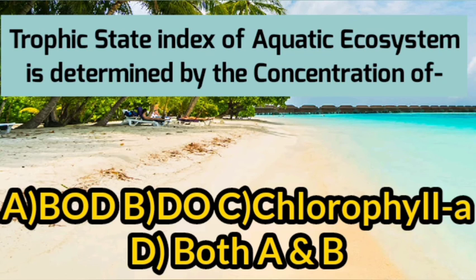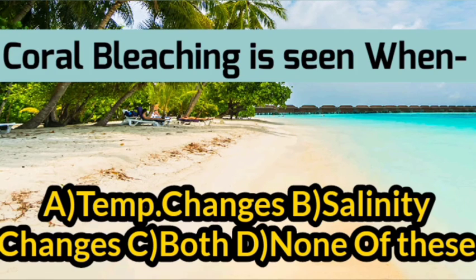The next question asks what determines the trophic state index of an aquatic ecosystem. The correct option is C — chlorophyll a determines the trophic state index of an aquatic ecosystem.